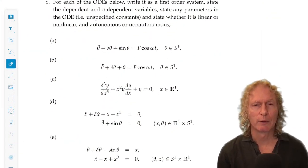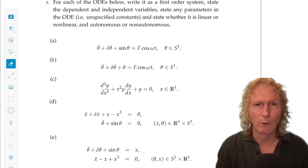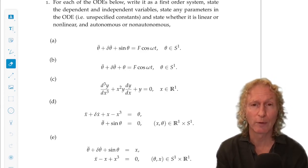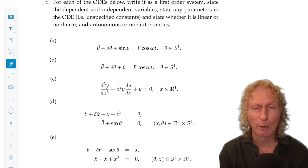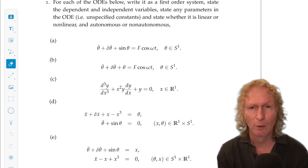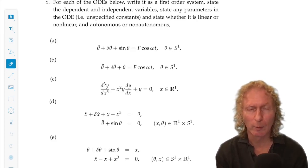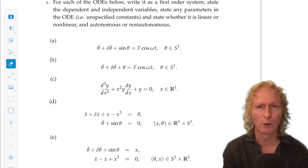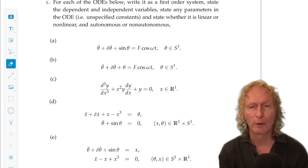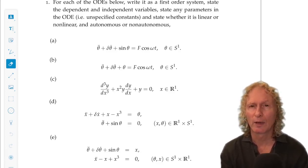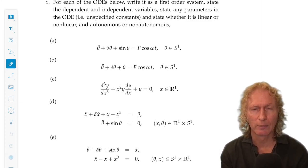So in the first problem, I give you five ODEs. I want you to write them as first-order vector ODEs. Tell me what the phase base is, what the dependent and independent variables are, whether they're autonomous or non-autonomous, and whether they're linear or non-linear. And if there are any unspecified constants in the problems, or parameters, state what they are.